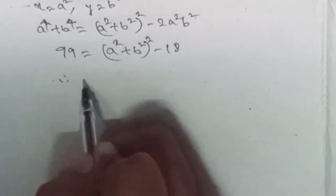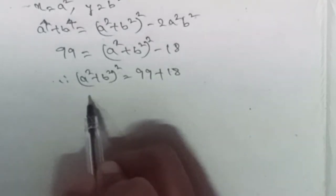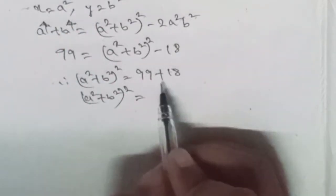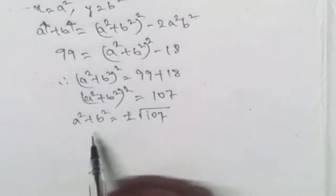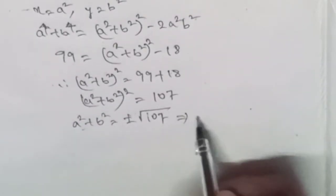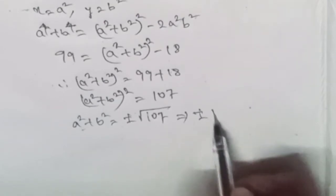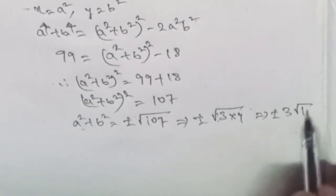That is, 2 into 9 equals 18. So the value of a squared plus b squared, whole square, is equal to 99 plus 18, which is 117. That means a squared plus b squared equals plus or minus the square root of 117, which simplifies as 13 times 9 under the root, giving plus or minus 3 root 13.